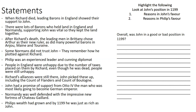Normandy was well defended with the impressive new fortress of Château Gaillard, which was very important to Richard's stronghold on Normandy. By 1199, Philip was just as rich as John because his wealth had grown significantly. Highlight reasons in John's favour and reasons in Philip's favour, then decide overall whether John was in a good or bad position in 1199. John did have some challenges to his rule, but on the whole John had a good position in 1199 because he adopted a lot of what Richard left him.